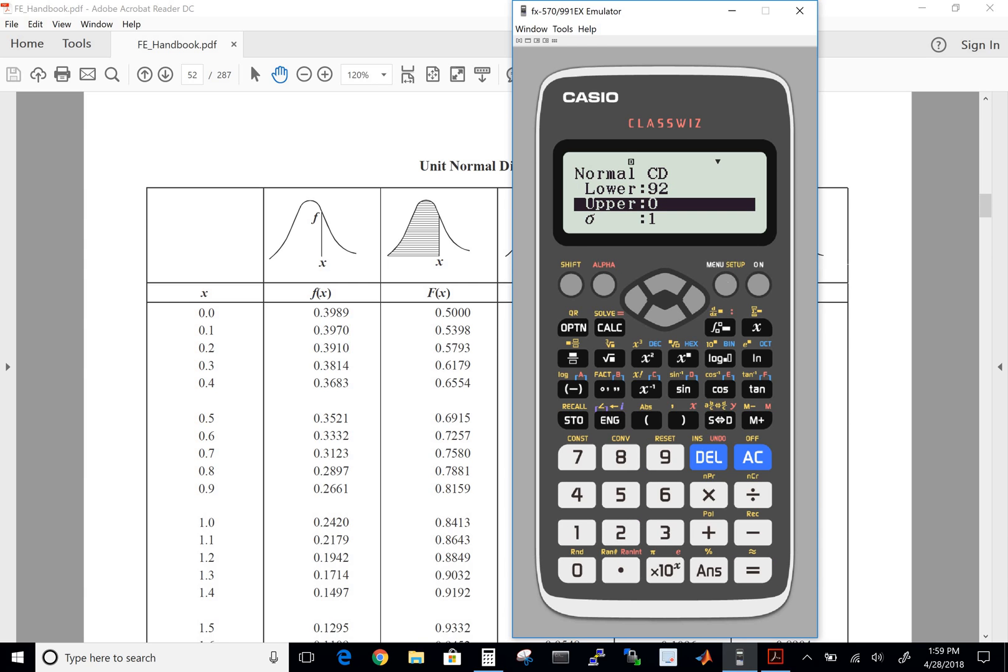And this calculator doesn't have an infinity button or an infinite concept, so the upper bound is going to be infinity. But since we don't have an infinity button, we're going to just make it a very large number and let's call it nine times 10 to the 99, so just any large number will do.